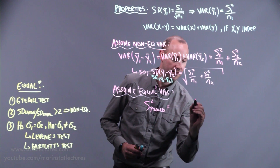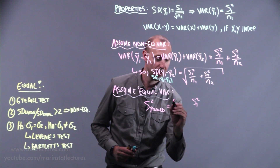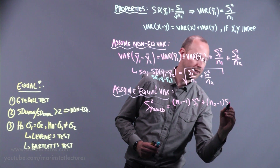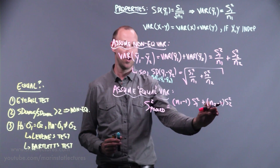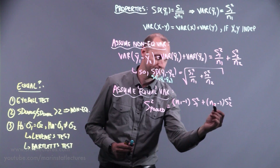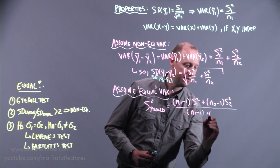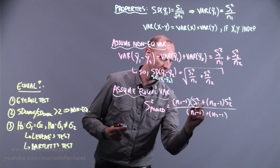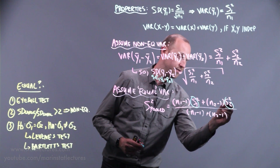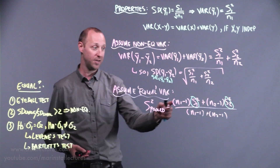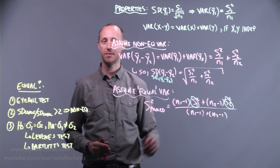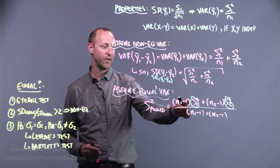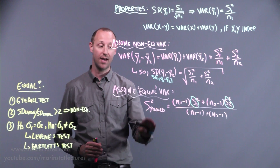In order to use that, we take what we call a pooled estimate — essentially a weighted average. We take the sample variance for group 1 weighted by its degrees of freedom (n1 minus 1), and the sample variance for group 2 weighted by its degrees of freedom (n2 minus 1), divided by (n1 minus 1) plus (n2 minus 1). This pooled estimate is a weighted average of the two variance estimates.